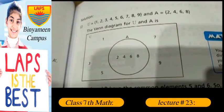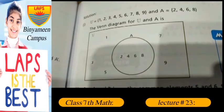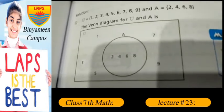U: 1, 3, 5, 7, 9, and A: 2, 4, 6, 8. Venn diagram of this question.